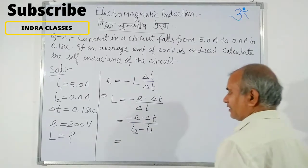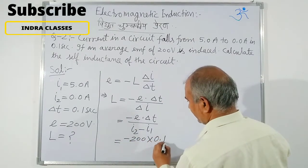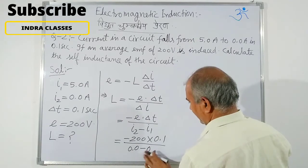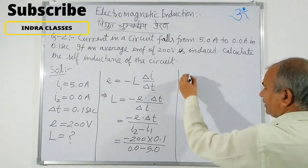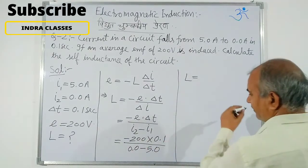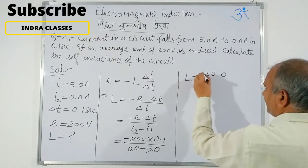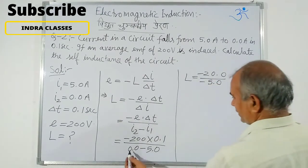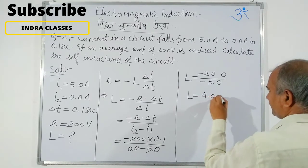Substituting values: L = −(−200) × 0.1 / (0.0 − 5.0). The numerator: 200 × 0.1 = 20. The denominator: 0.0 − 5.0 = −5.0. So minus divided by minus gives positive: L = 20/5 = 4.0 Henry.